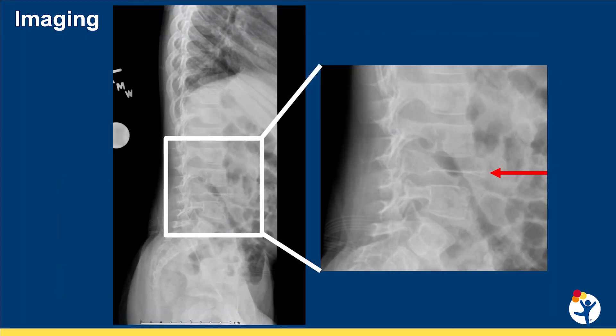Where we're most concerned about CRMO is when it occurs in the spine. Because in most locations in the body, although any bone can be affected, we don't generally see pathologic fractures or long-term deformity. That's not true for the spine.